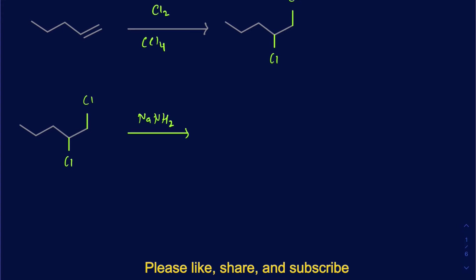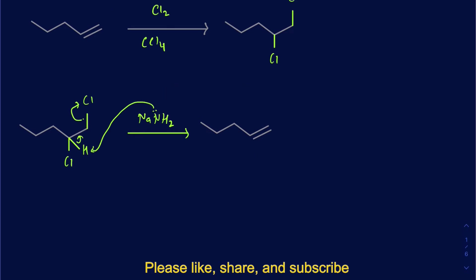In the first step, you remove one of the protons, which gives you an alkene with one chlorine still present. Then in the second step, you use NaNH₂ again to remove the second proton, and you end up making an alkyne.